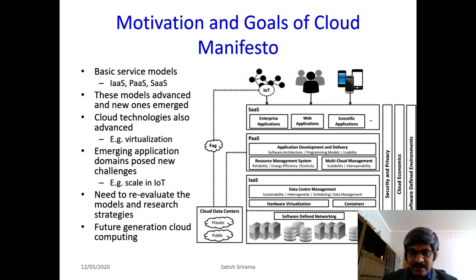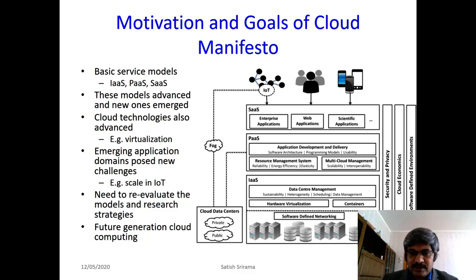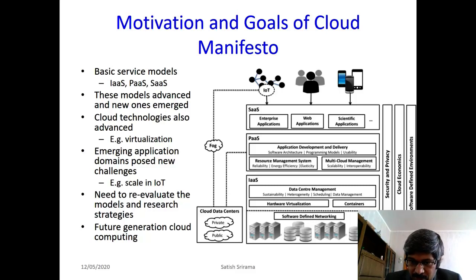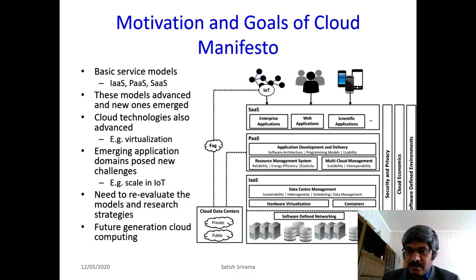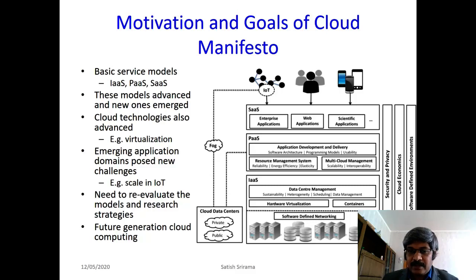These basic service models have advanced further and new ones have emerged — literally everything is now provided as a service, what we call XaaS. Cloud technologies themselves have advanced significantly, for example with containers in virtualization. Cloud is now extensively used by emerging applications like IoT and social networking. With all these advances, we need to reevaluate the models and research strategies for emerging technologies and applications.